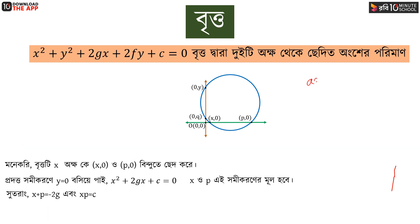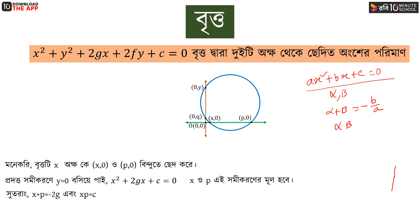We can write the quadratic as ax squared plus bx plus c equal to 0, where the roots are alpha and beta. We know that the sum of the roots, alpha plus beta, equals minus b by a.